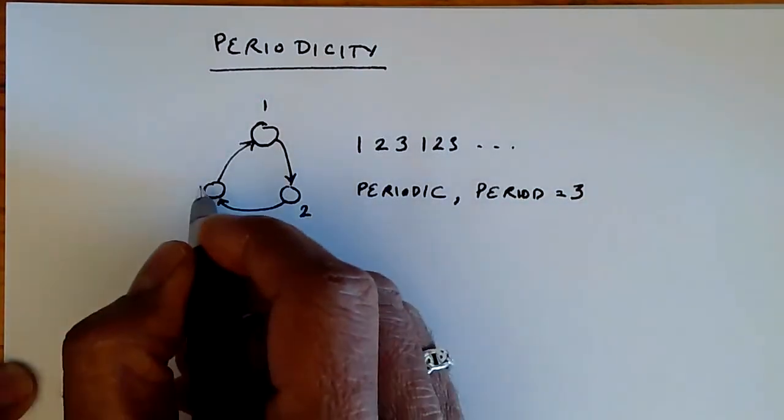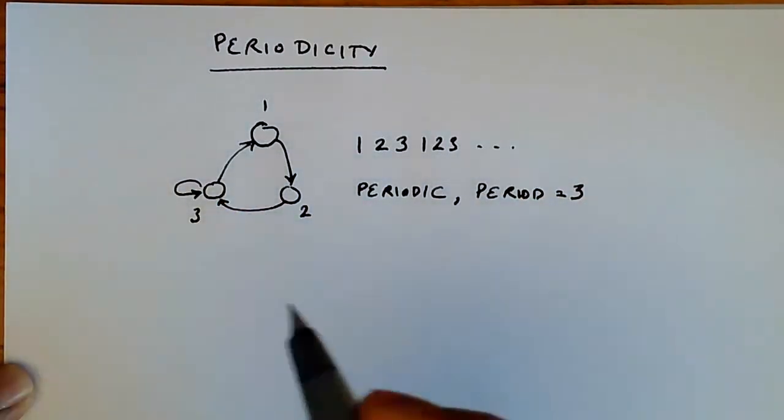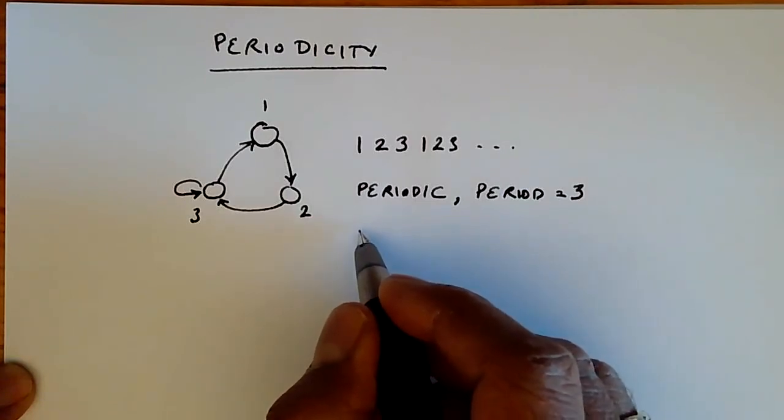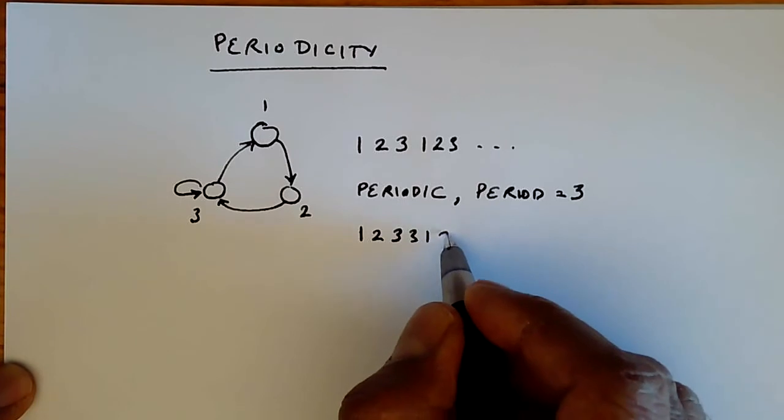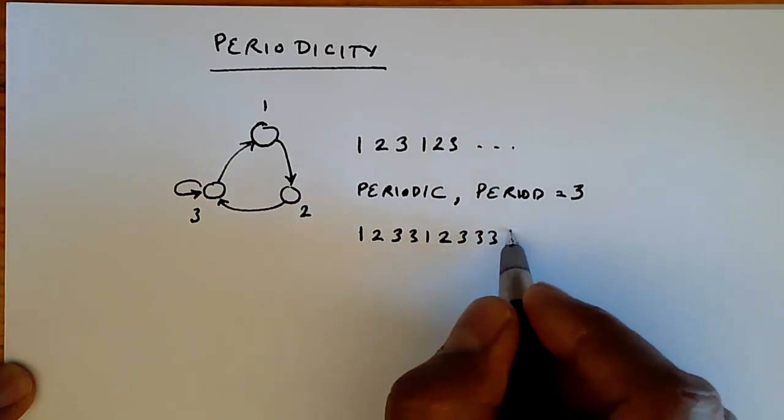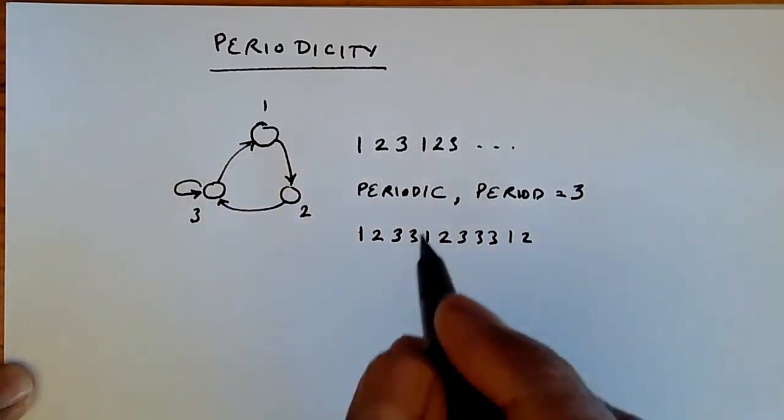Now, on the other hand, if you had a self-loop over here, then you could have a trajectory that looked like this: 1, 2, 3, 3, 1, 2, 3, 3, 3, 1, 2, etc. And because of this, every state becomes aperiodic because of this self-loop.